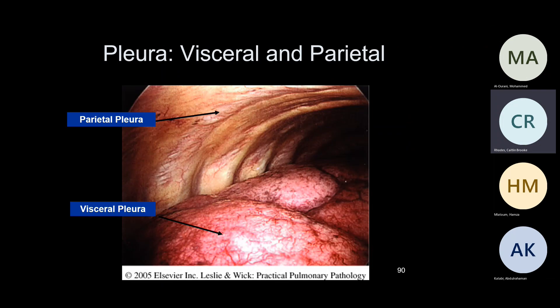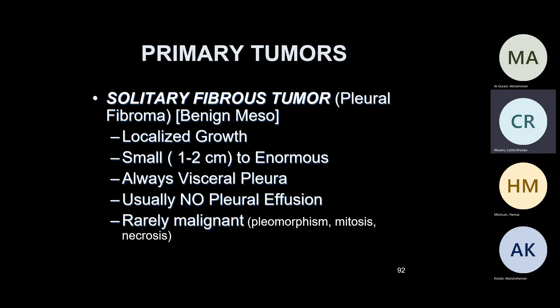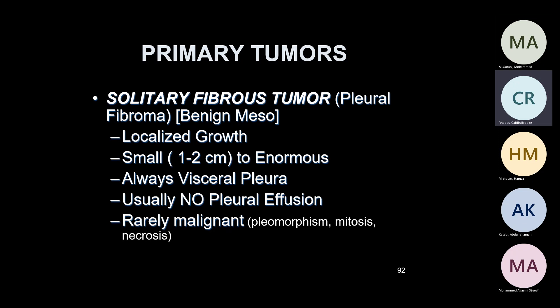A couple of things about the pleura. Parietal pleura is on the chest wall, visceral lining is on the visceral surface. Tumors of the pleura can be primary or secondary — secondary tumor is more common, coming from the lung or from the breast. If you have pleural fluid, always send cytology. I rarely make a diagnosis of malignant mesothelioma in cytology — to call it malignant mesothelioma, you need tissue invasion.